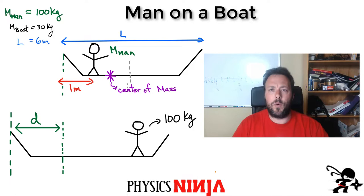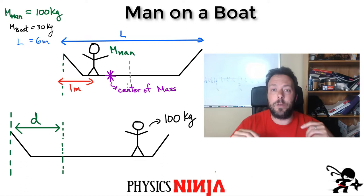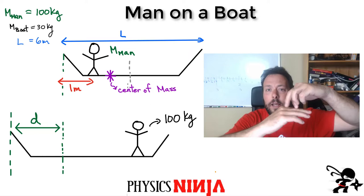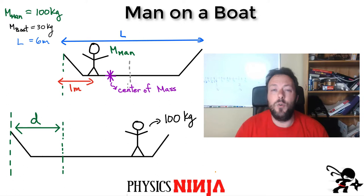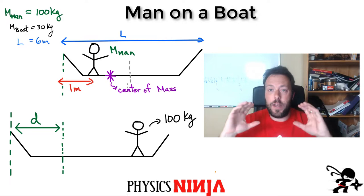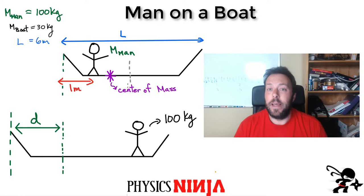The man and the boat form a system. Although the boat sits in water, we assume there are no forces between the water and the boat. The only forces are the action-reaction pair of friction between his feet and the boat. As he walks, he pushes on the boat making it move left, and friction on his feet allows him to move forward. The key is that the center of mass position must remain the same since there's no net external force on the system.